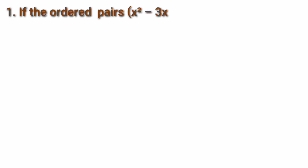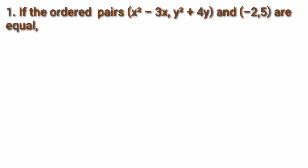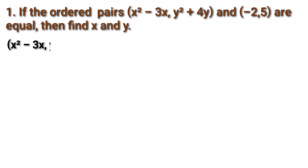First sum: if the ordered pairs (x² - 3x, y² + 4y) and (-2, 5) are equal, then find x and y. We will have two ordered pairs.